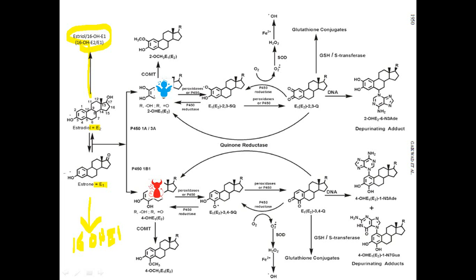What we want to focus on are the 2 and 4-hydroxy estrogens. The 2-hydroxy estrogens are more favorable in terms of cancer risk. Things like DIM and I3C will help upregulate this pathway, and that's used a lot to keep from making the 4-hydroxy estrogens in any great amounts.